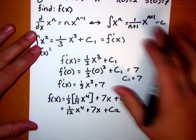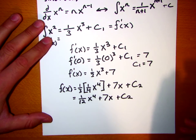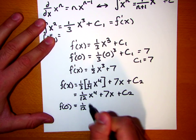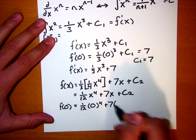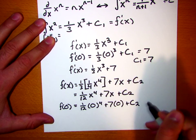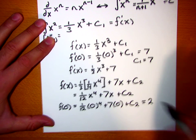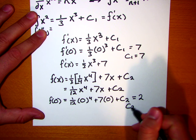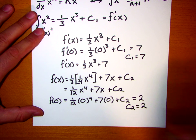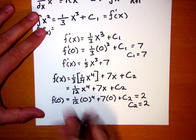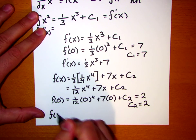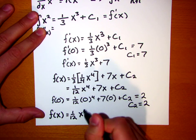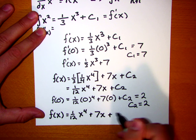And we have one more initial condition, f of 0 equals 2. So if we plug that in, we see f of 0 is equal to 1 twelfth 0 to the fourth plus 7 times 0 plus c2. And we know that this is equal to 2. And so these two terms obviously cancel out. So we've got c2 is equal to 2. And now we plug in this final constant to our original equation for f of x. And we see that f of x is equal to 1 twelfth x to the fourth plus 7x plus 2.